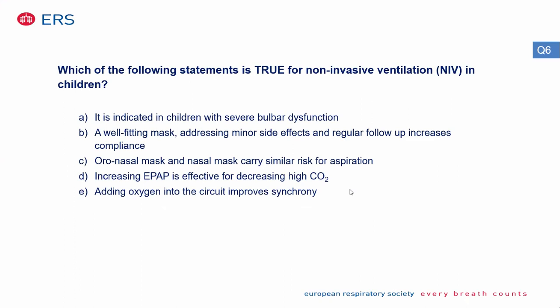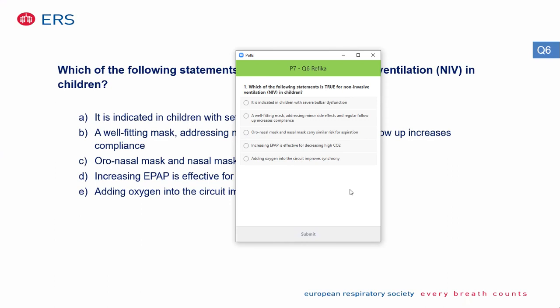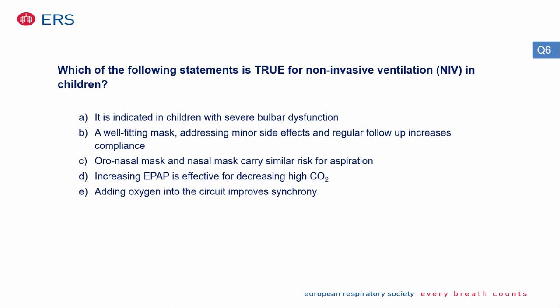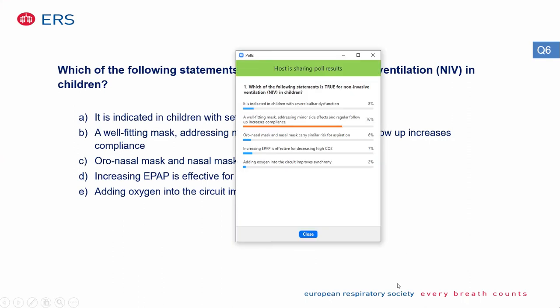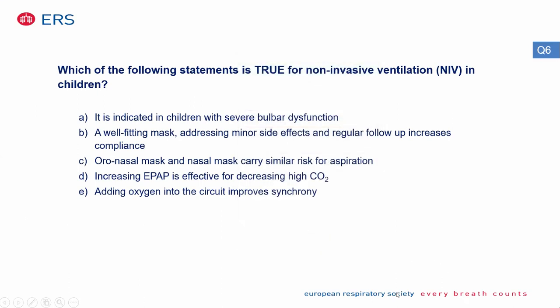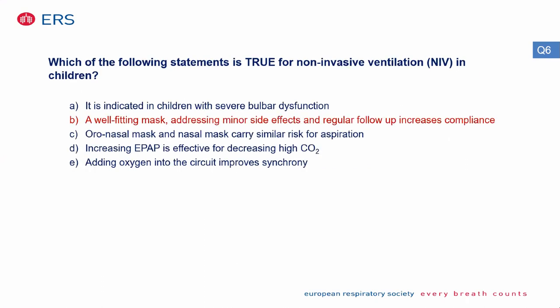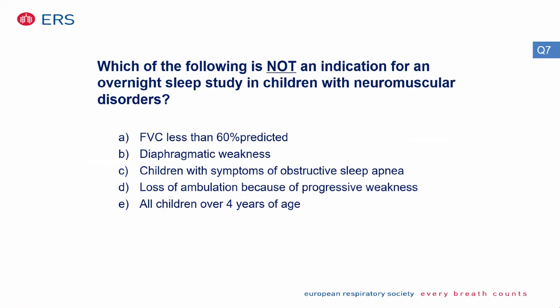Which of the following statements is true for non-invasive ventilation in children? It's indicated in children with severe bulbar dysfunction; a well-fitting mask addressing minor side effects and regular follow-up increases compliance; oral-nasal mask and nasal mask carry similar risk for aspiration; increasing EPAP is effective for decreasing high CO2; or adding oxygen into the circuit improves synchrony. The correct answer is that a well-fitting mask, addressing minor side effects, and regular follow-up increases compliance. Increasing IPAP and the rate — not EPAP — improves CO2 levels.